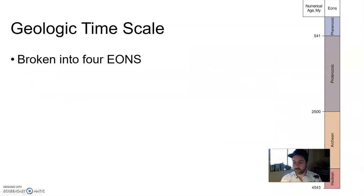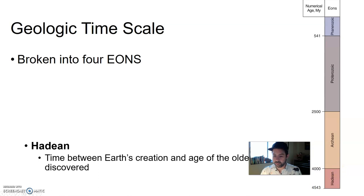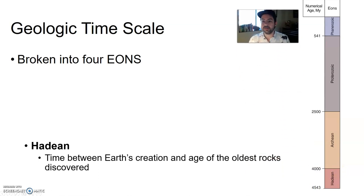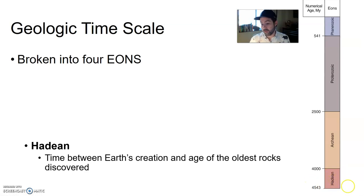All of geologic time is broken up first into eons — these are the biggest chunks. The Hadean is the time between Earth's creation and the age of the oldest rocks discovered, about 4 billion years old. During this time, Earth was just a hot, molten ball of mess. It took almost over 500 million years for rocks to form before the surface started to cool down enough.